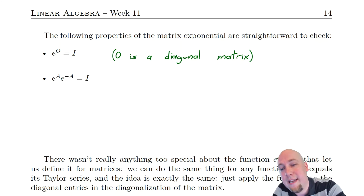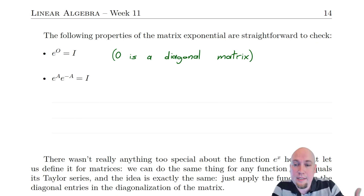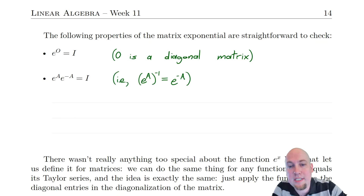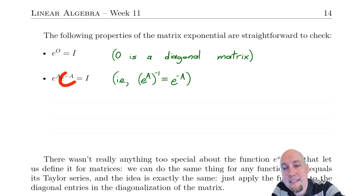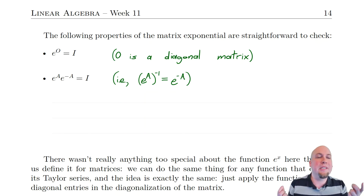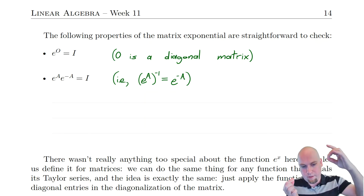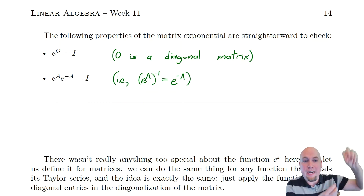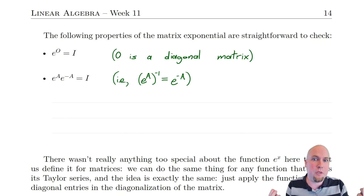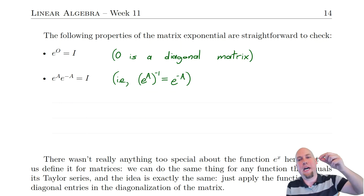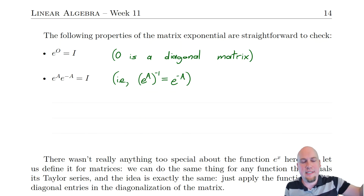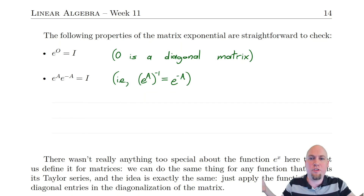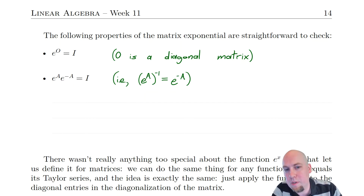Another nice property is that e to the power A times e to the power minus A is always the identity matrix — in other words, the inverse of e to the power A is e to the power minus A. This is completely analogous to the exponential function for real numbers: e to the power x times e to the power minus x equals one, so one divided by e to the power x is e to the power negative x. These exponential rules hold for matrices as well.